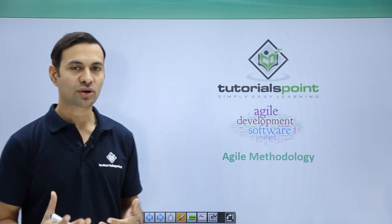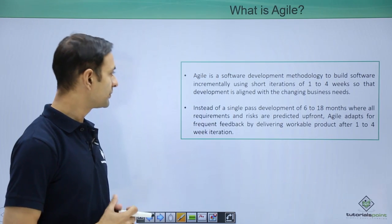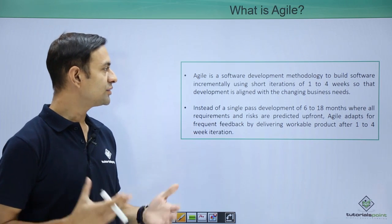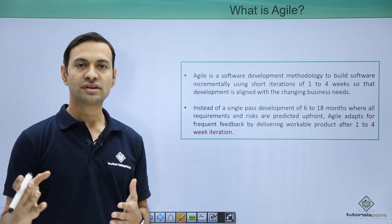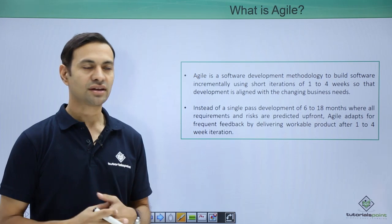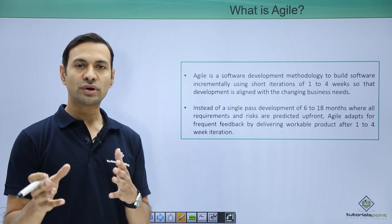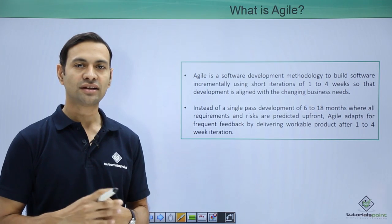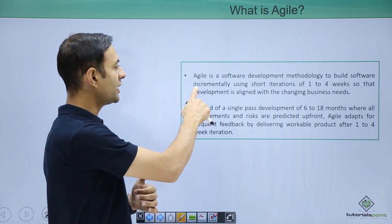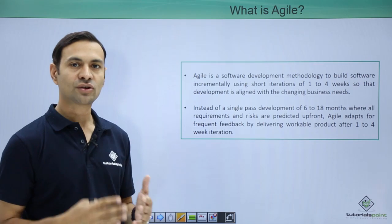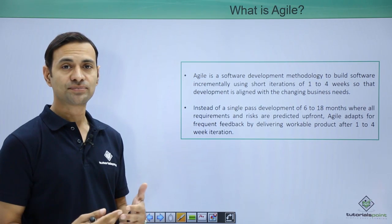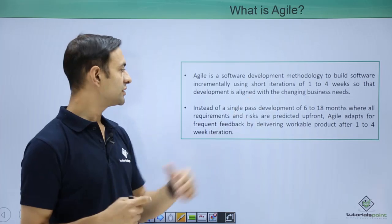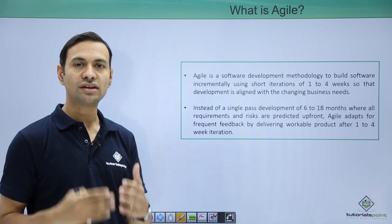So what Agile is all about — Agile is a software development methodology which caters to business changes and business requirement changes. You need to incorporate those changes in your software during the development life cycle. Agile is a software development methodology to build software incrementally using short iterations of 1 to 4 weeks so that your development is aligned with the changing business needs.